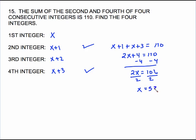Now it's asking me to find all four integers, so I've got to go back up into here. x is 53, put 53 in here, makes 54 the next one. And of course 55 is the one after that, followed by 56. And we can check that by adding the second and the fourth, these two that are checked, 54 plus 56 does equal 110.